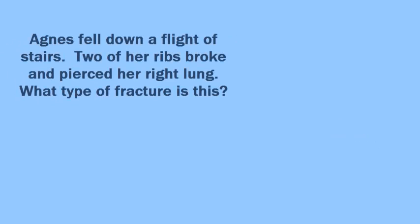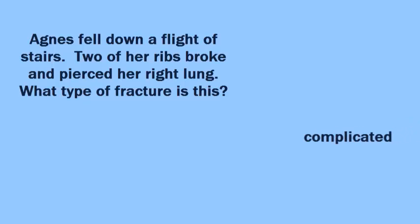The next question: Agnes fell down a flight of stairs; two of her ribs broke and pierced her right lung. What type of fracture is this? This is a complicated fracture. Any complicated fracture that involves an organ is very serious.